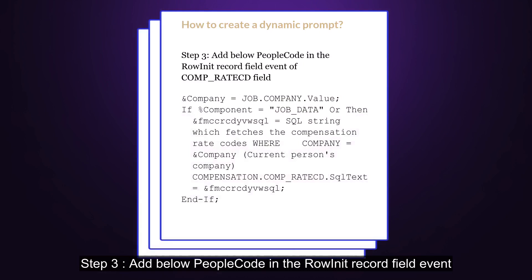Step 3: Add below PeopleCode in the row init record field event of COMP_RATECD field, where FMCCR_CDYVWSQL is SQL string which will pull the compensation rate codes valid only for the current person's company.